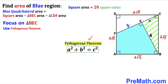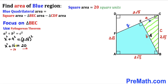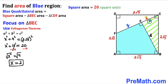Here's the Pythagorean theorem: A squared plus B squared equals C squared. Calling the longest leg side C, side A is X and side B is 4. So X squared plus 4 squared equals (2√5) squared. Subtracting 16 from both sides, X squared equals 4. Taking the square root, X turns out to be positive 2.